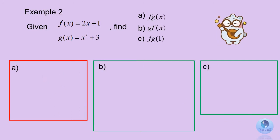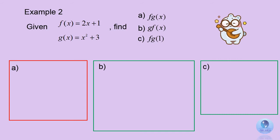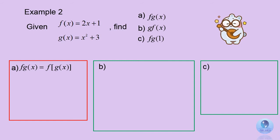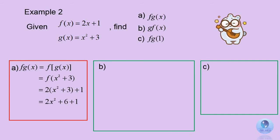Let's look at the second example. You are given two functions: f of x equals 2x plus 1, and g of x equals x squared plus 3. Question A: find f of g of x. You need to substitute g of x, which is x squared plus 3, into f of x. You get 2 multiplied by x squared plus 3, plus 1. And finally, you get the answer 2x squared plus 7.